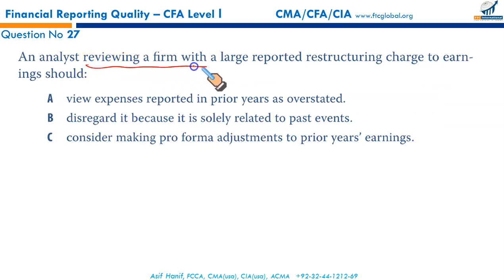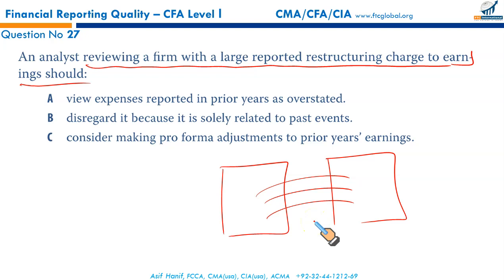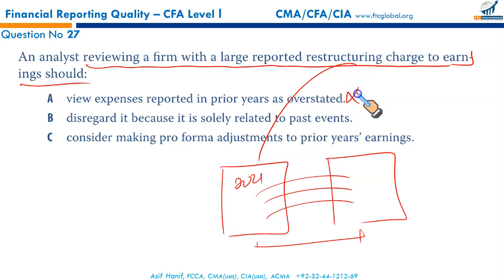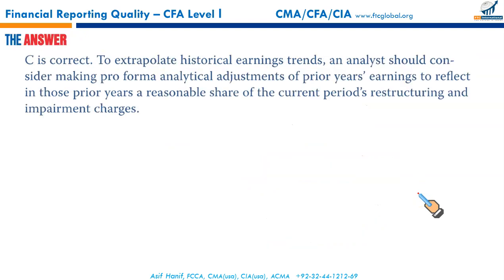An analyst reviewing a firm with a large reported restructuring charge to earnings should do what? When comparing financial statements, they must be on a comparable basis. You can't assume prior year expenses were overstated, and you shouldn't disregard the charge. The correct approach is to consider making pro forma adjustments to prior years' earnings so as to make them comparable — bringing them on an equal basis for comparison. That is the right approach and completes the EOC questions for this reading.